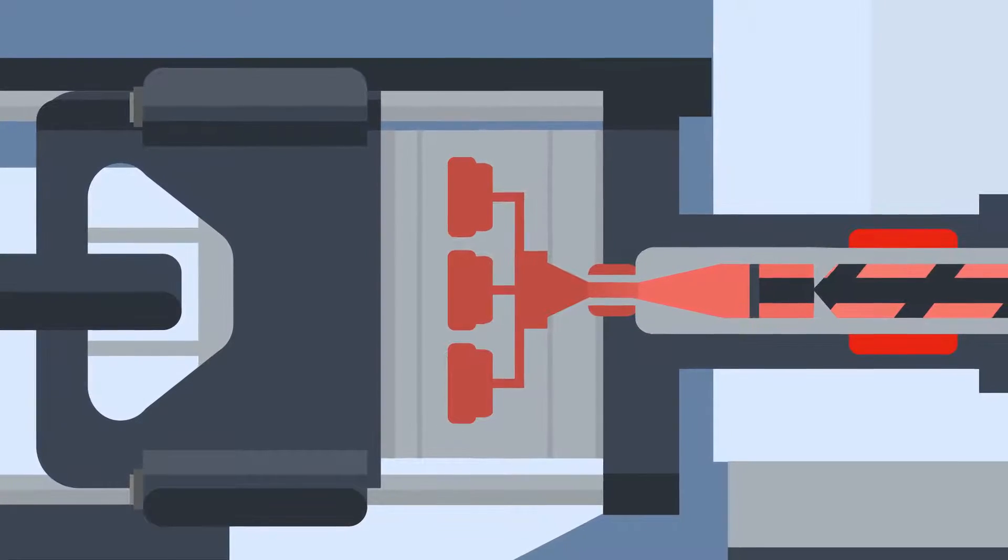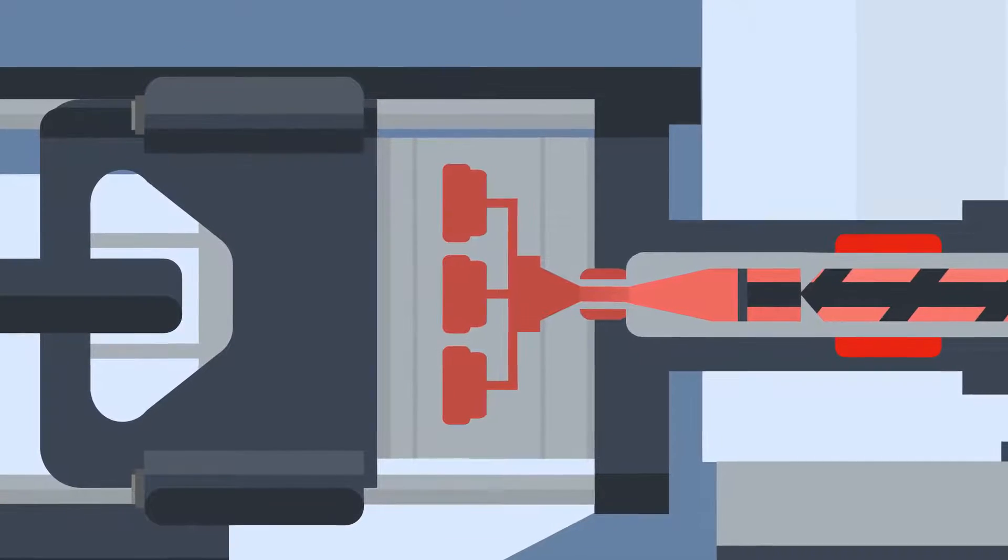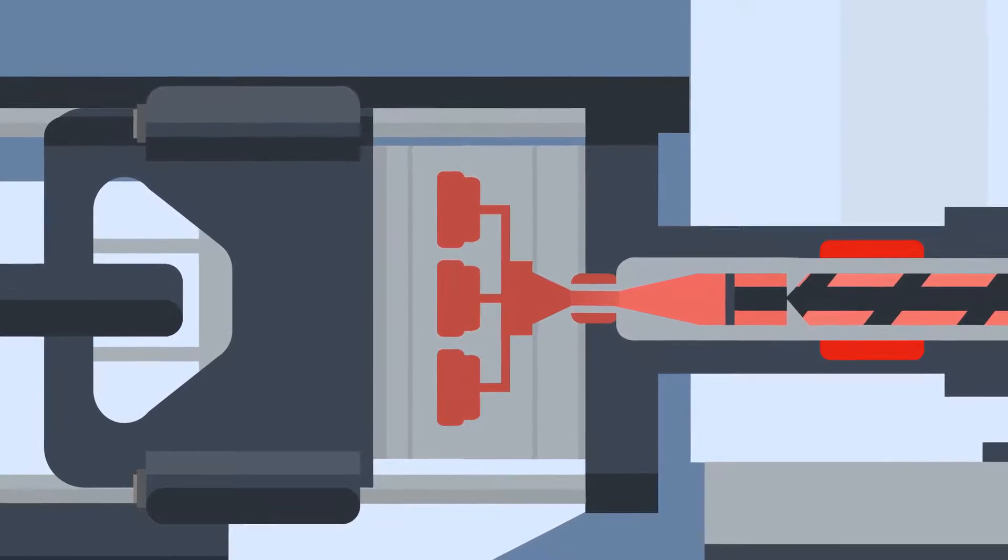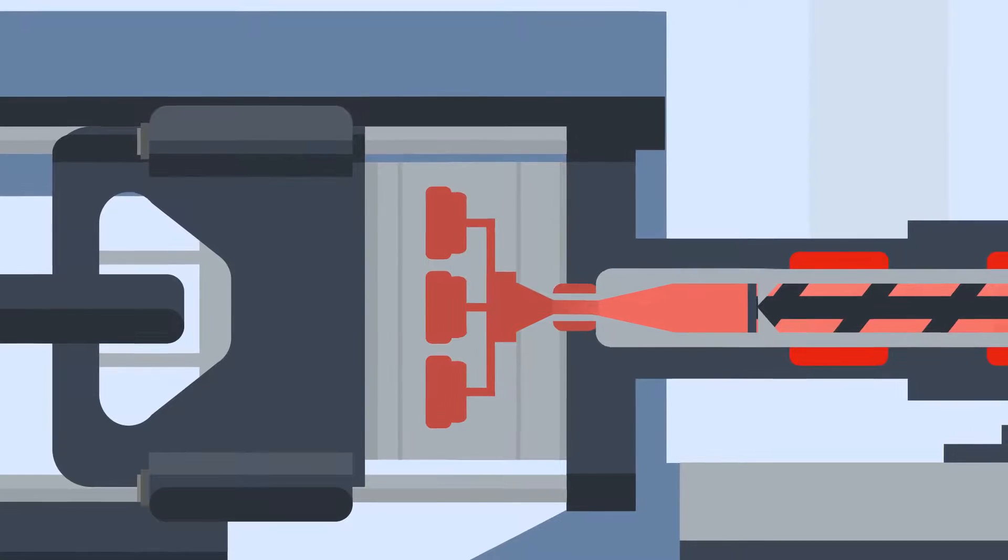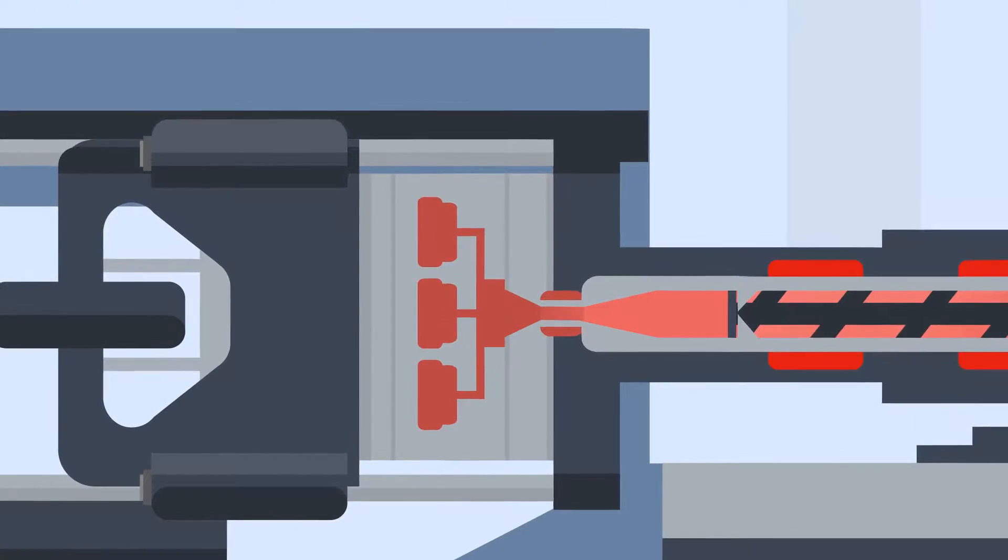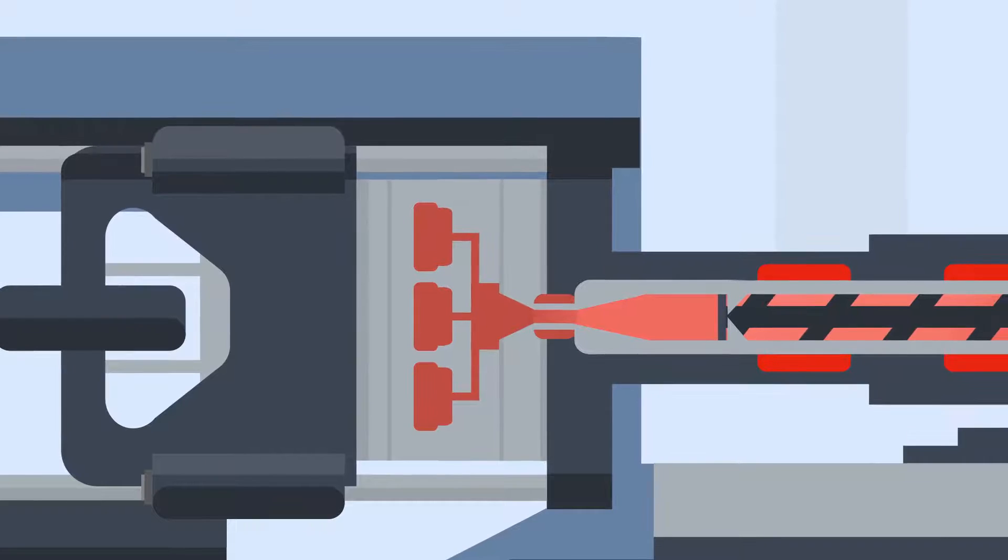When the tool cavity is mostly full of liquid, a holding phase begins, where the part starts to take its final form. After a set holding time, the screw will screw back to its set point. This happens at the same time as the cooling phase of the cycle.